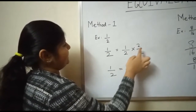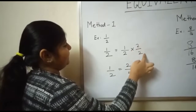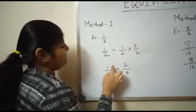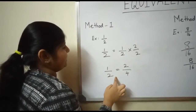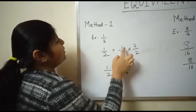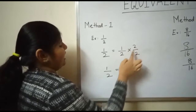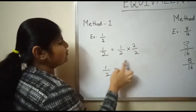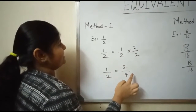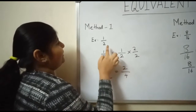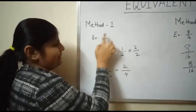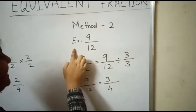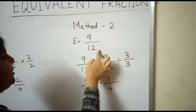1/2 — multiply the numerator and the denominator by the same number. 1/2 is equal to: 1 times 2 is 2, 2 times 2 is 4. So 2/4 is the equivalent fraction of 1/2.